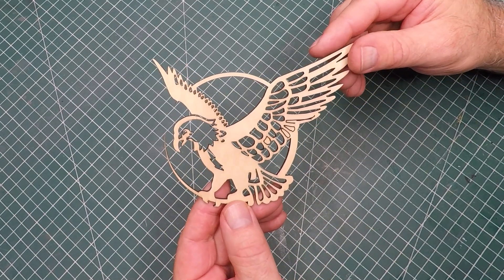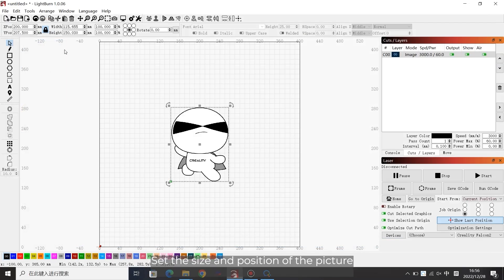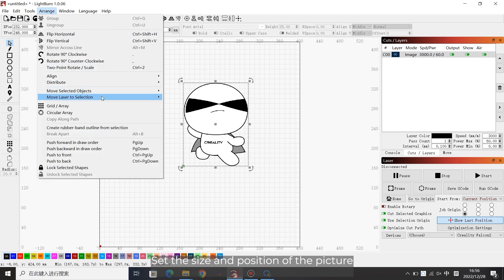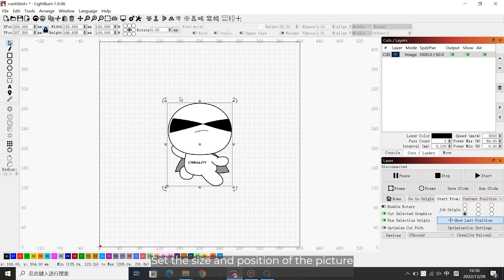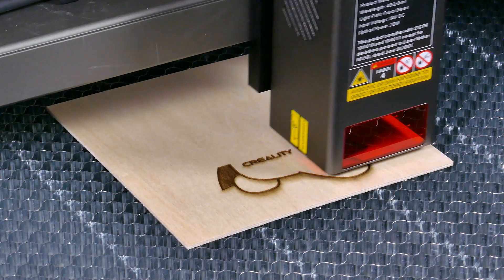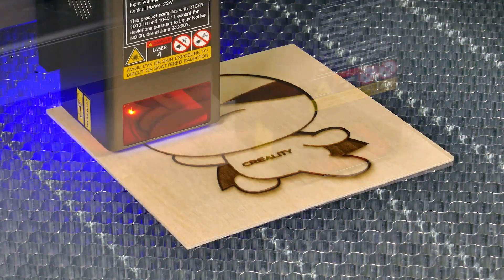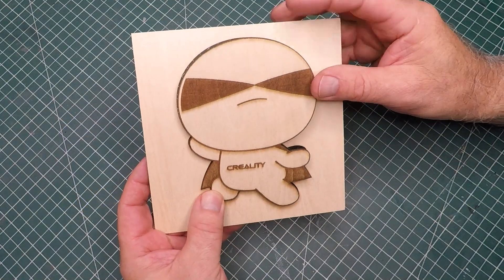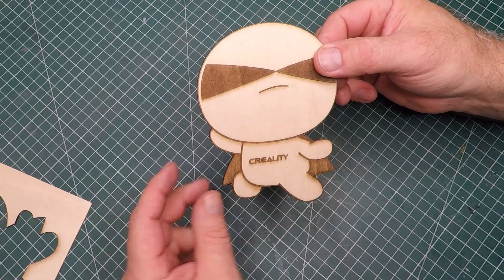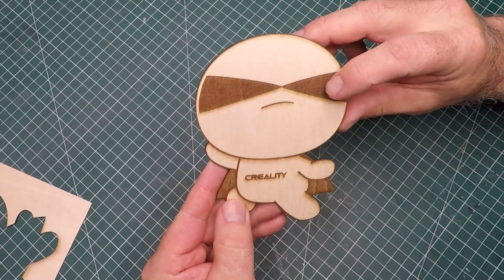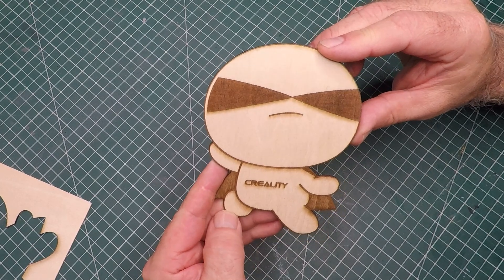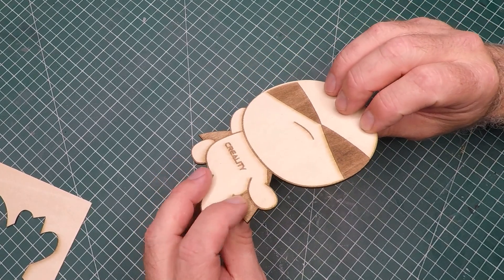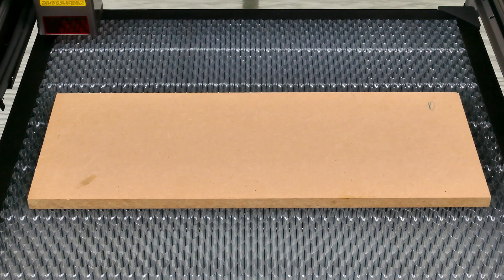So the next job was to do a cut out and engrave. So again I used one of Creality's templates. I set it up using the instructions which was pretty straightforward then sent it off to the laser unit. Now this one did take a little bit longer, it took about 15 minutes because it was engraving as well as cutting out. And this also came up really well. I really like the way it engraved the timber. It cut about a millimeter into it and it gave it this light brown finish. That's because you can actually adjust the strength of the laser.